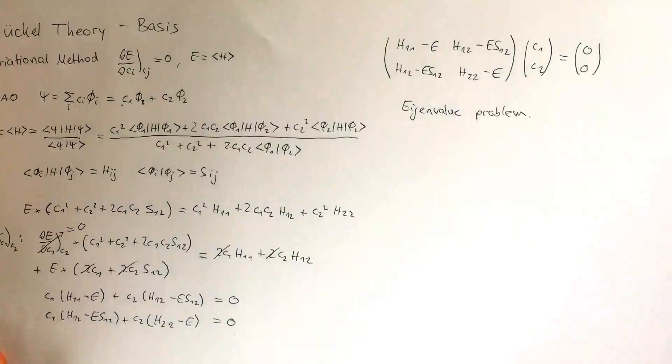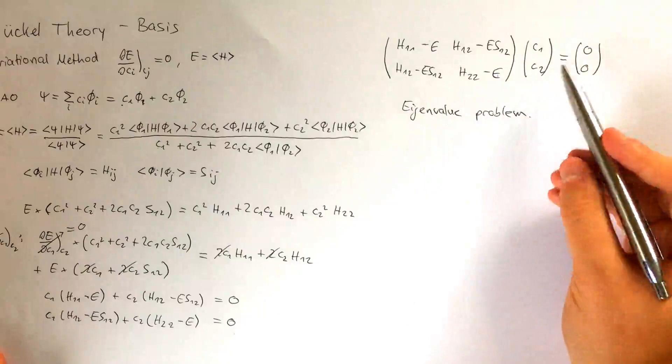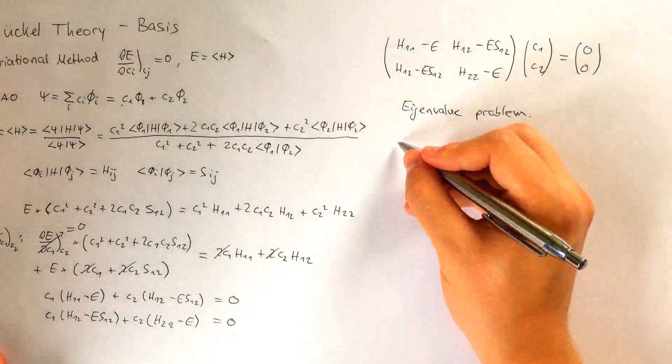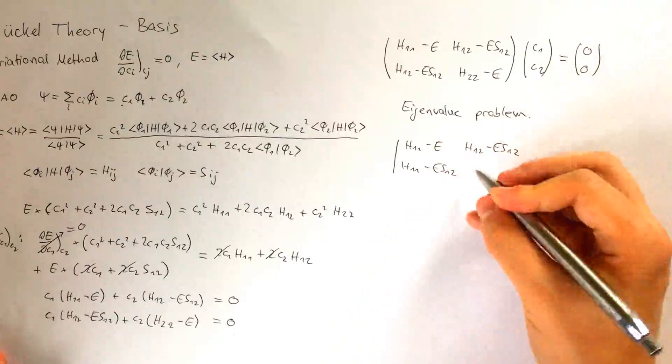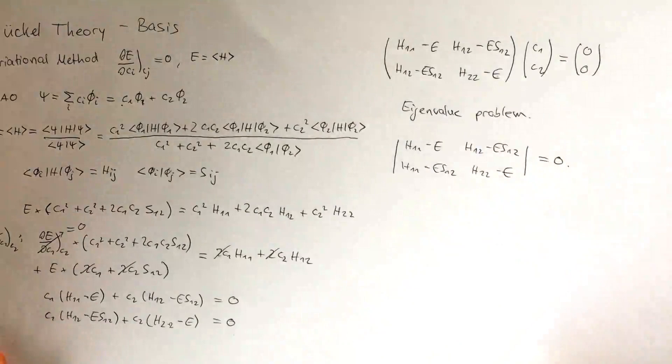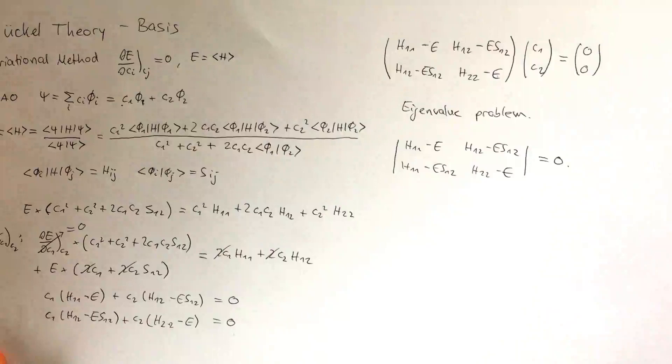And in order to get the eigenvalues for the energy, what we'll have to do is find non-trivial solutions for this equation. And we'll only find non-trivial solutions, which means that C1 and C2 are not just zero, if the determinant is zero. So that's what we have to solve. We'll have to set the determinant equal to zero, which in this case would give us a second order equation.